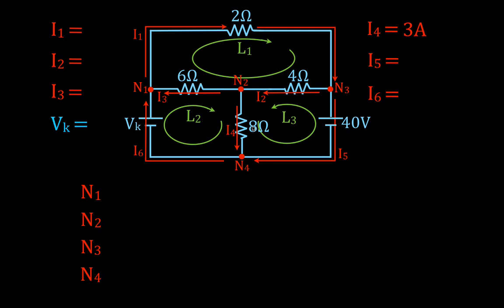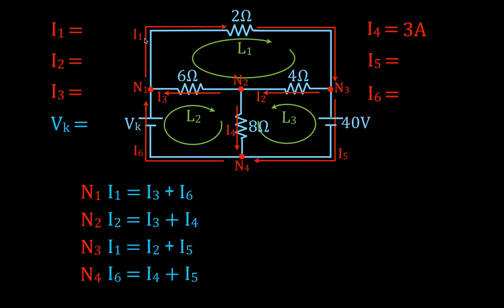The current rule states that the sum of the currents in and out is equal to zero, or the currents in are equal to the currents out of each node. At this node, for example, currents I3 and I6 flow in and are equal to current I1 which flows out. These are the current rule applications for the rest of the nodes — currents in are equal to currents out.